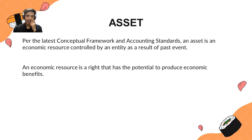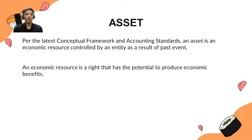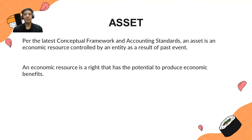The definition of an asset is: an economic resource controlled by an entity as a result of a past event. The conceptual framework also defines what an economic resource is — it is the right that has the potential to produce economic benefits. This is the new definition of assets.